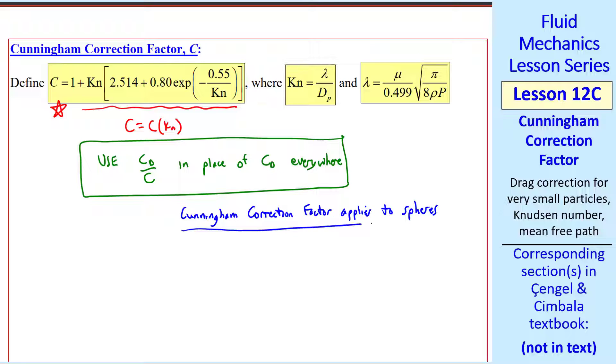Note that the Cunningham correction factor applies to spheres. If we have non-spherical particles, we usually calculate some kind of equivalent spherical diameter so that we can use the Cunningham correction factor and the drag coefficient for a sphere.